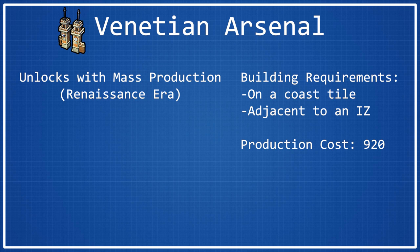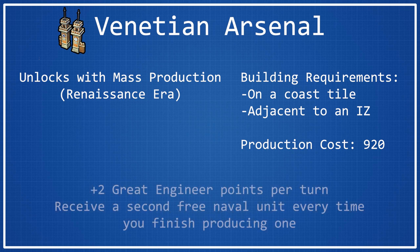It also has a production cost of 920 production, which is standard for all Renaissance-era wonders. As far as the Venetian Arsenal's bonuses, it has two and they're both pretty straightforward. For one, you get plus two Great Engineer points per turn. Plus two really isn't all that many. It's nice, but it's not going to jump you up very far in the lead for Great Engineer points or anything.